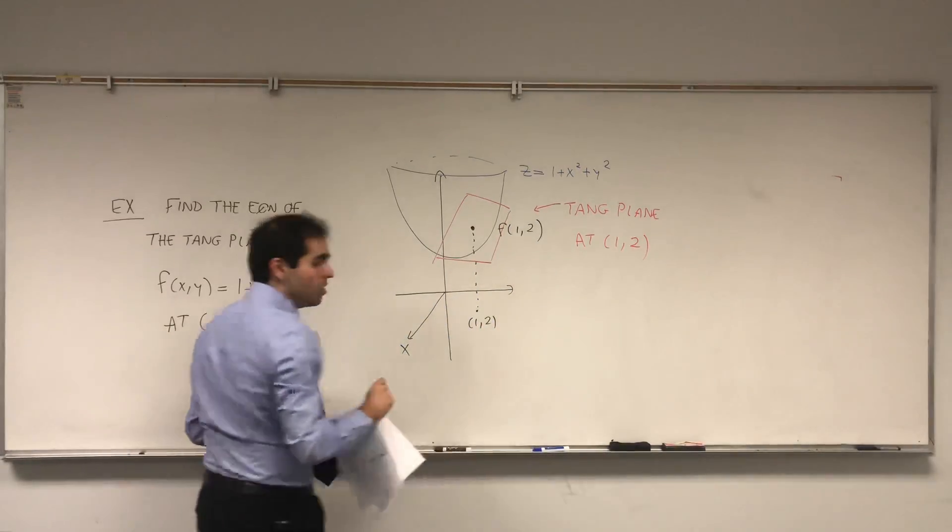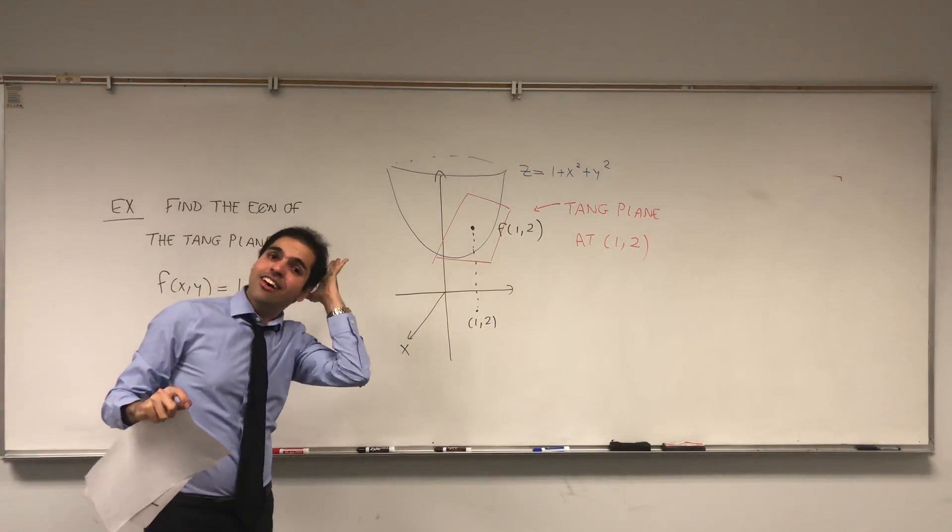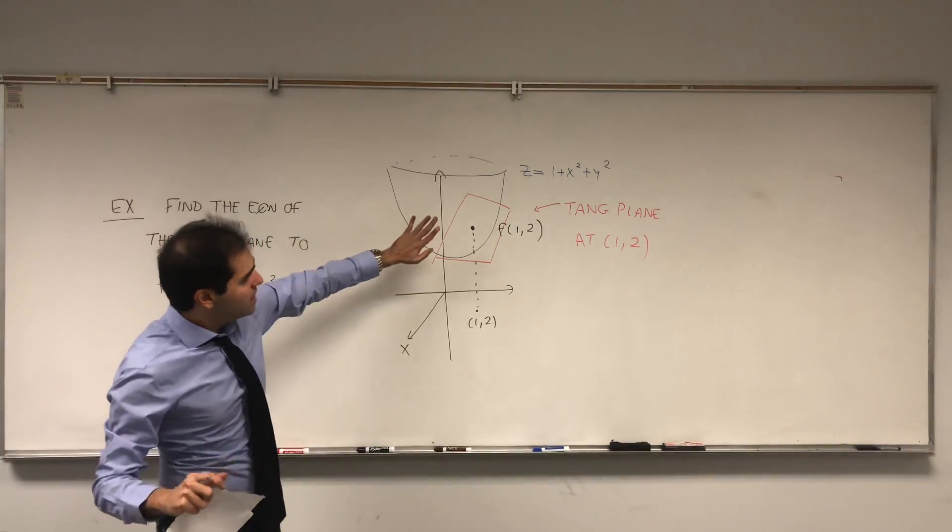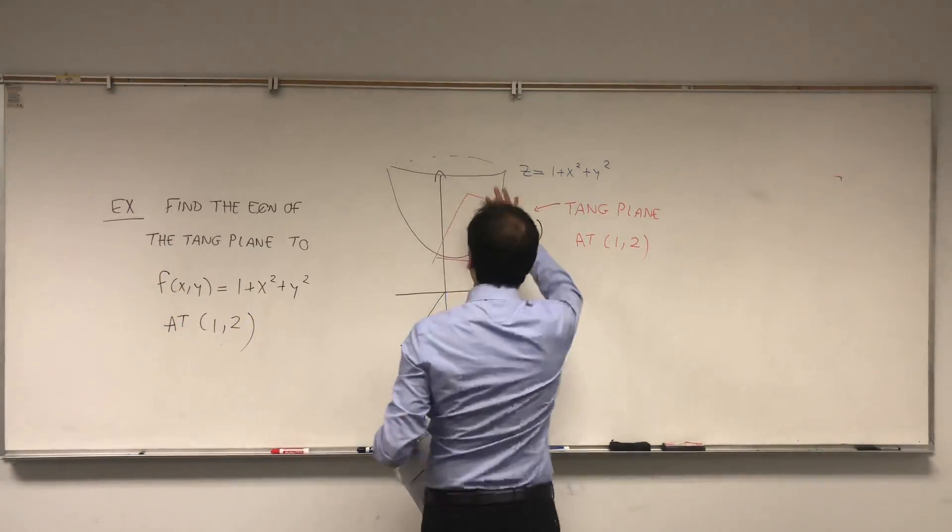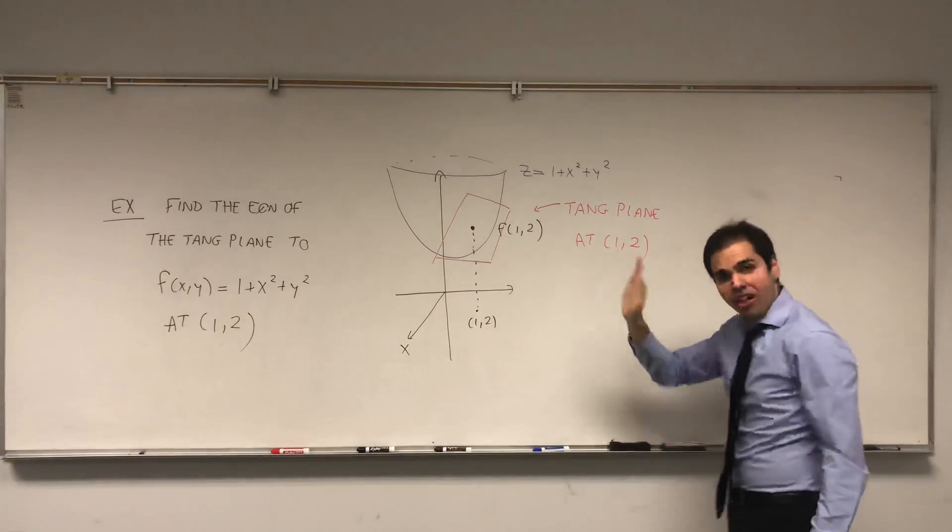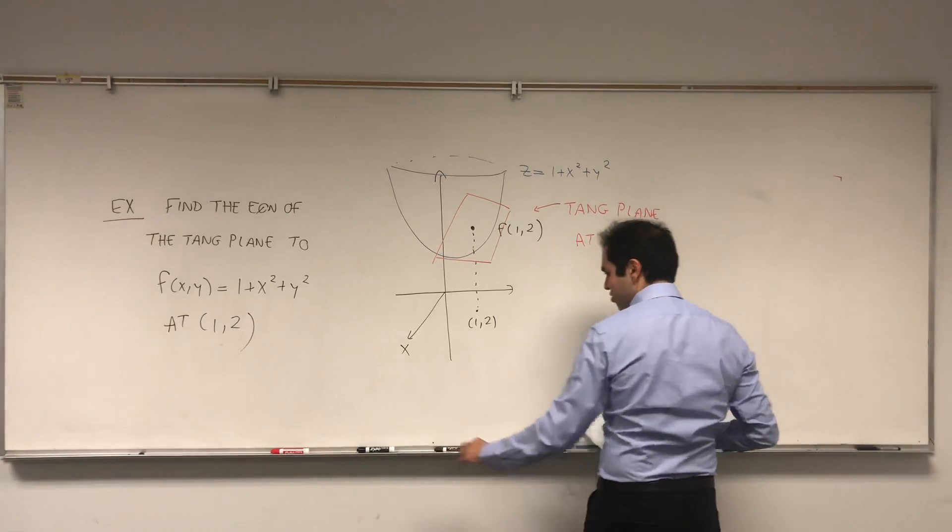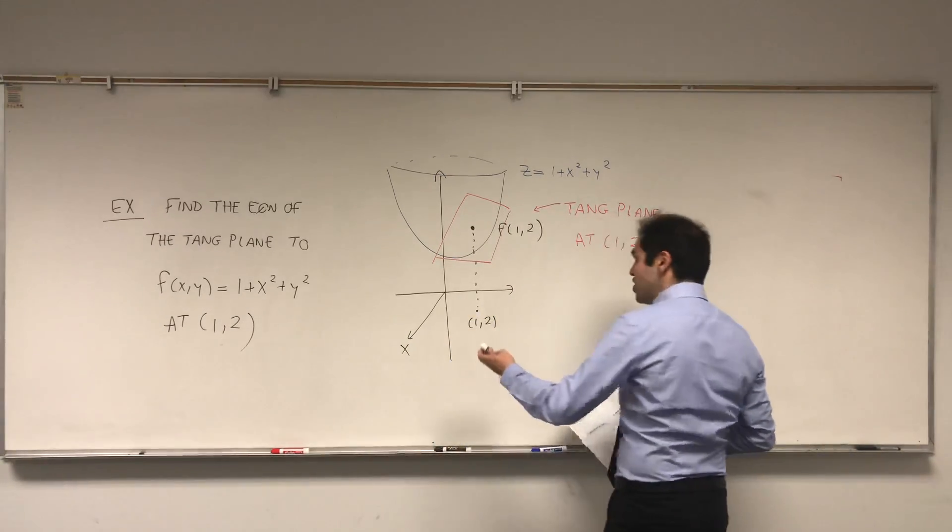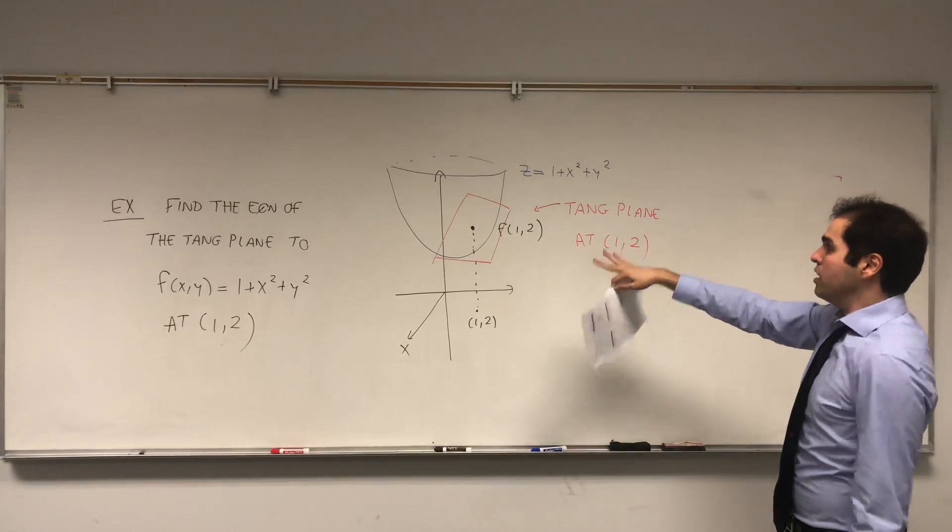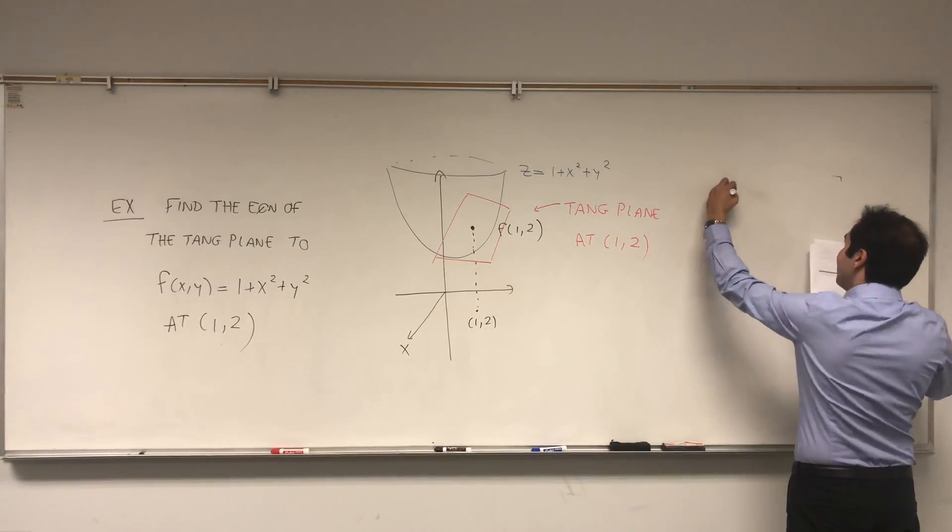Almost think about it like a pillow that just nudges your head or something. This is the same thing. We have, at this point, sort of a plane that kind of nudges or touches the function 1 + x² + y². And the question is, what is the equation of that tangent plane?